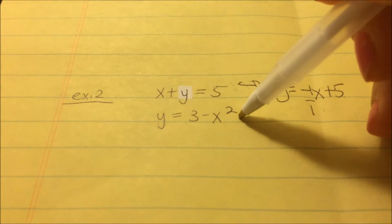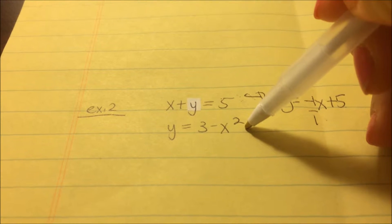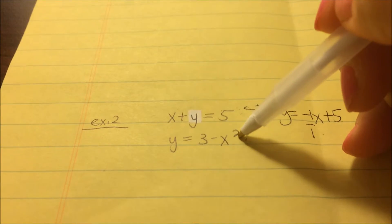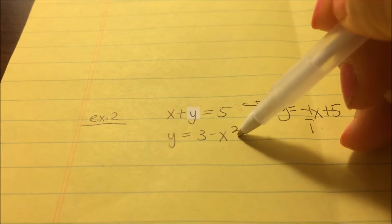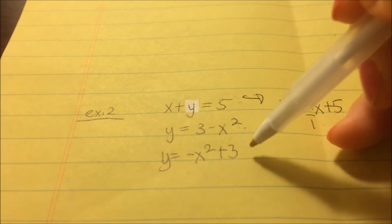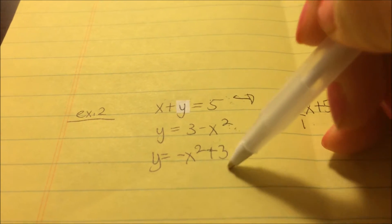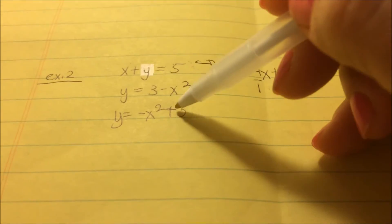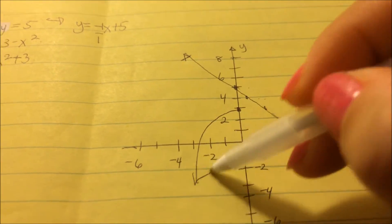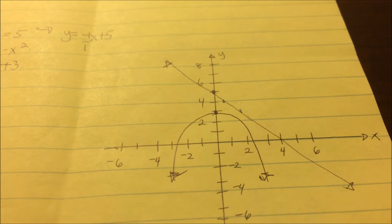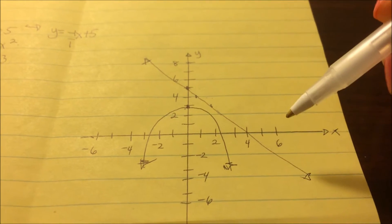The second equation, y equals negative x squared plus 3, is a parabola because it has an x squared term. The y-intercept is at 3, and since there's a negative in front, it's an upside-down parabola. When you graph both equations, there is no intersection — so in this case there is no solution.